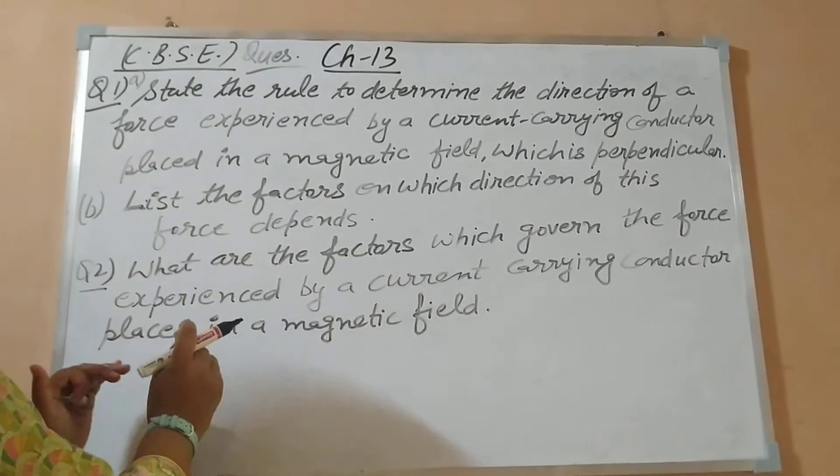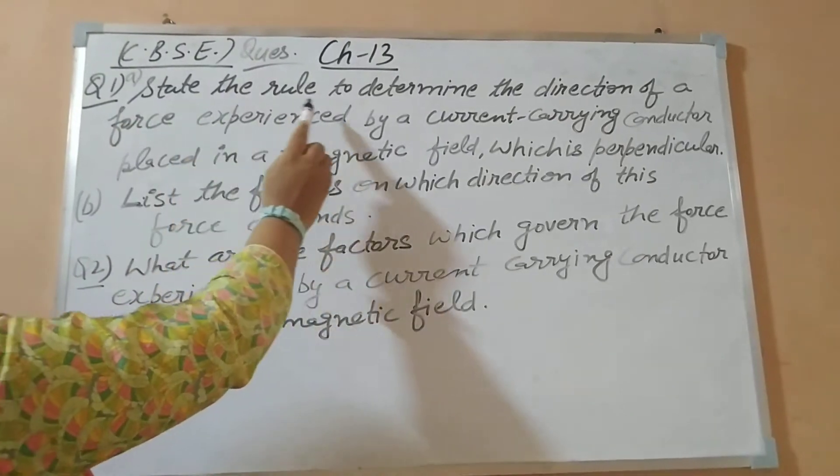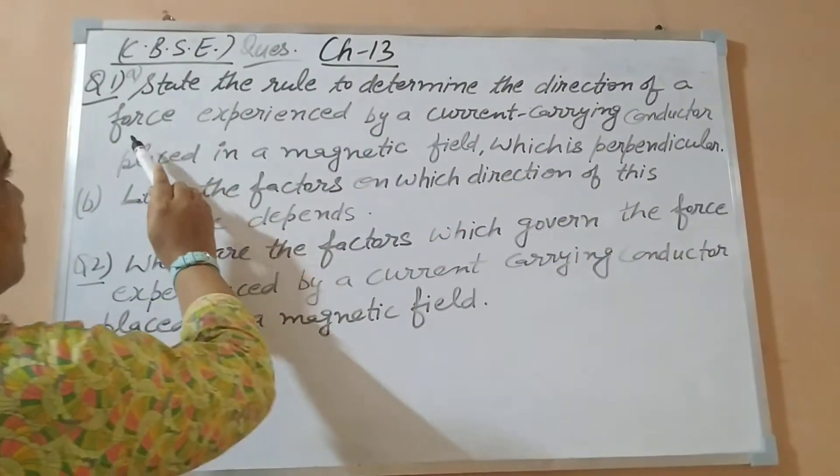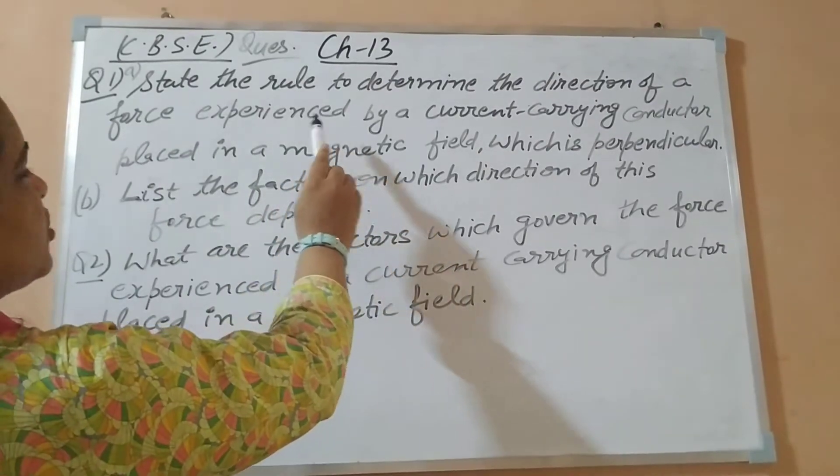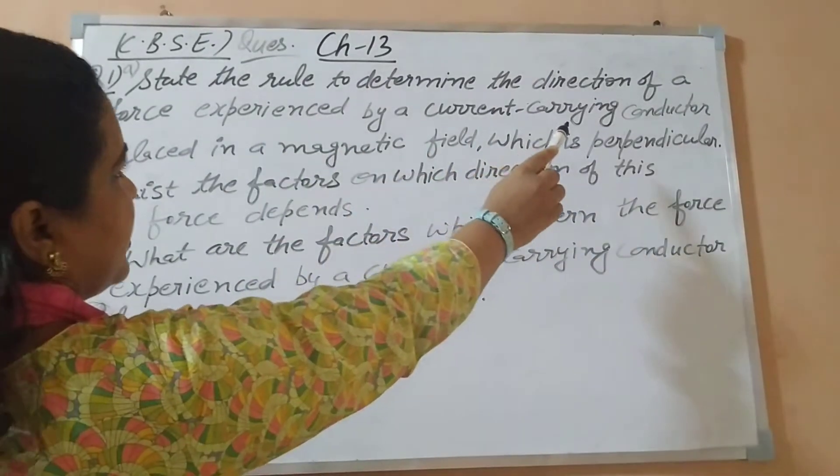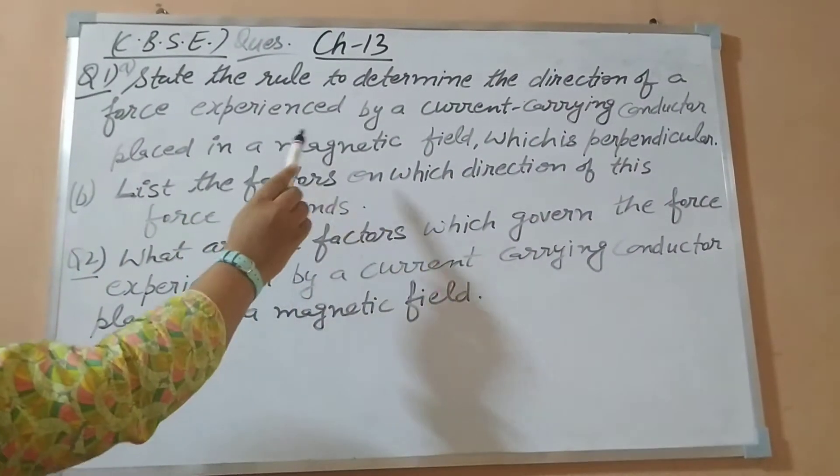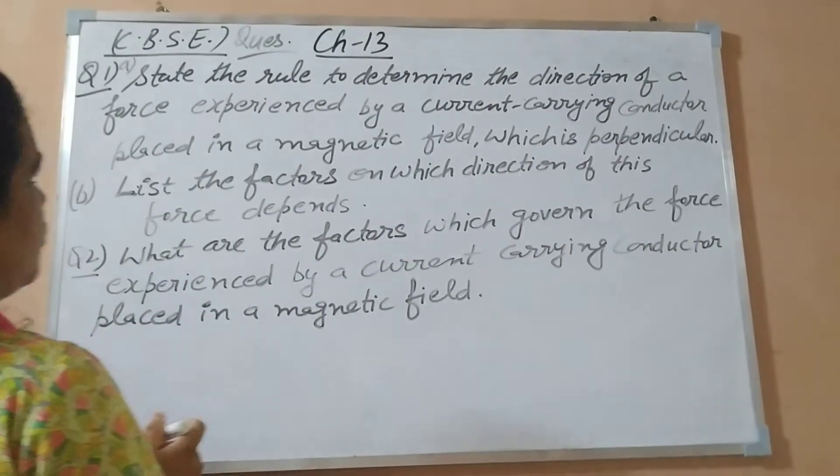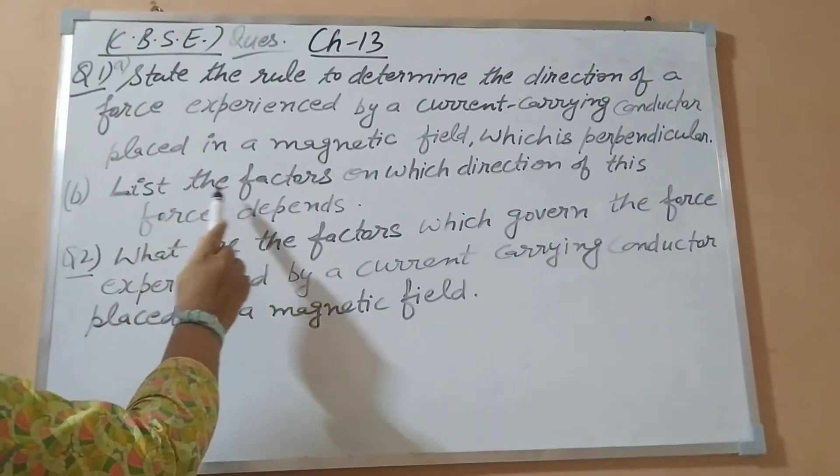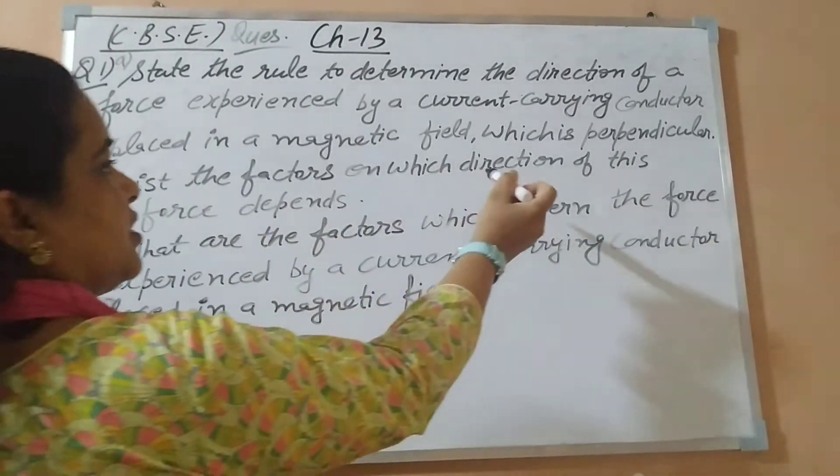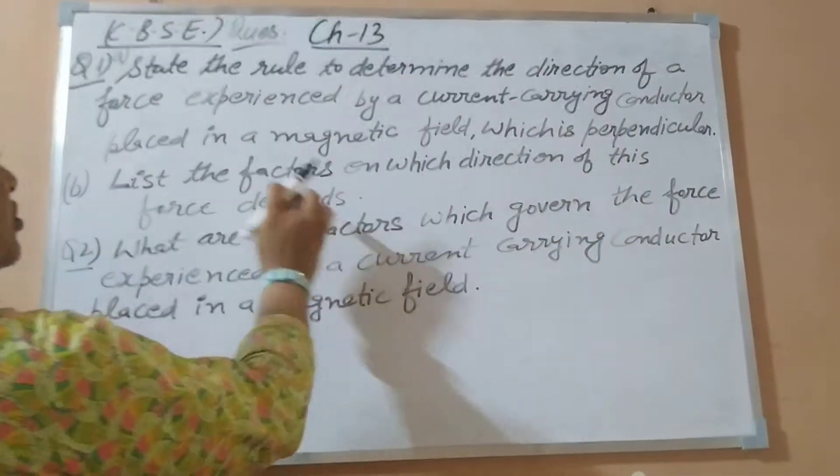So the first question is, and these are already CBSE exam questions. First: state the rule to determine the direction of a force experienced by a current carrying conductor placed in a magnetic field which is perpendicular. Part B of this question is: list the factors on which the direction of this force depends.